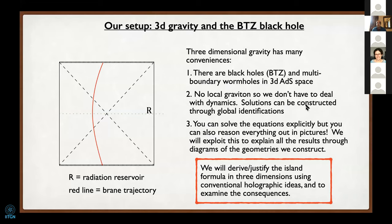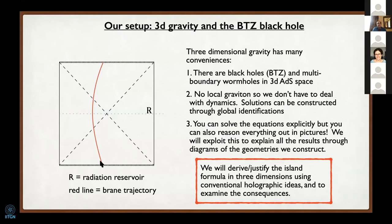Because there is no local graviton, we don't have to deal with dynamics, and all solutions of interest can be constructed through global identifications of three-dimensional anti-de Sitter space. This means that although you can solve the equations completely explicitly, you can also reason everything out in pictures. Let me remind you what the Penrose diagram of the BTZ black hole looks like: there's the future and past singularity, two asymptotic infinities, and the two horizons running between them. I've drawn a red line as a dynamical trajectory of a brane going through this space.